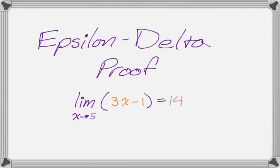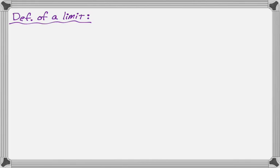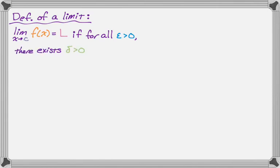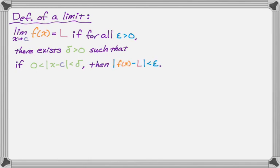First, let's see what the definition of a limit is. The limit as x approaches c of f of x is equal to L if, for all epsilon greater than 0, there exists a delta greater than 0, such that if 0 is less than the absolute value of x minus c is less than delta — that's a delta neighborhood, an x-axis thing — then the absolute value of f of x minus L will be less than epsilon.